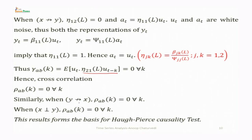Similarly, when y does not cause x, ρ_ab(k) = 0 for all k. And for instantaneous causality, if x does not instantaneously cause y or y does not instantaneously cause x, then ρ_ab(k) = 0 for all k. When x and y are independent, ρ_ab(k) = 0 for all k. This result forms the basis for the Haugh-Pierce causality test, which we will discuss next.